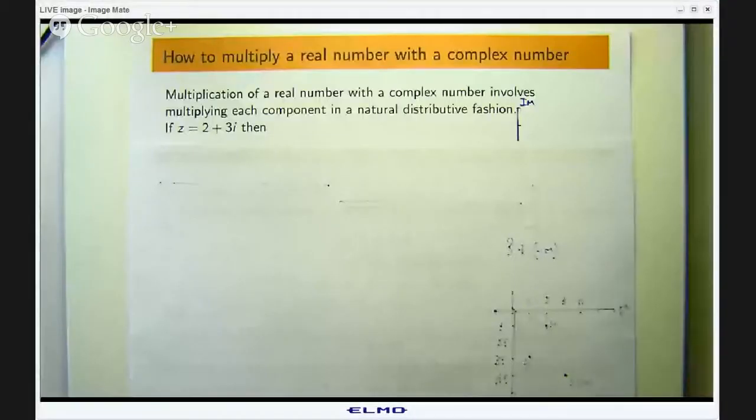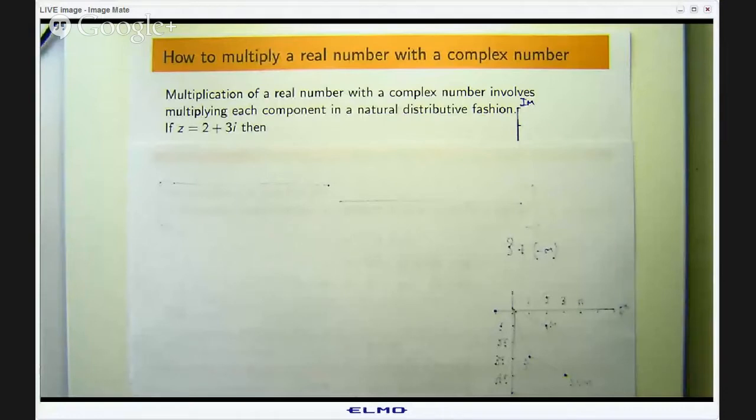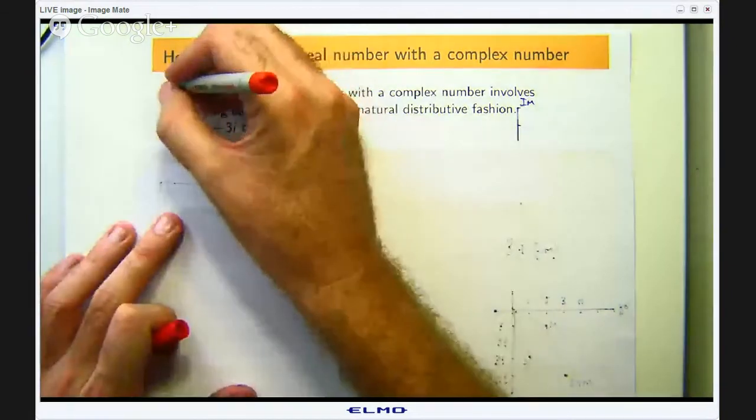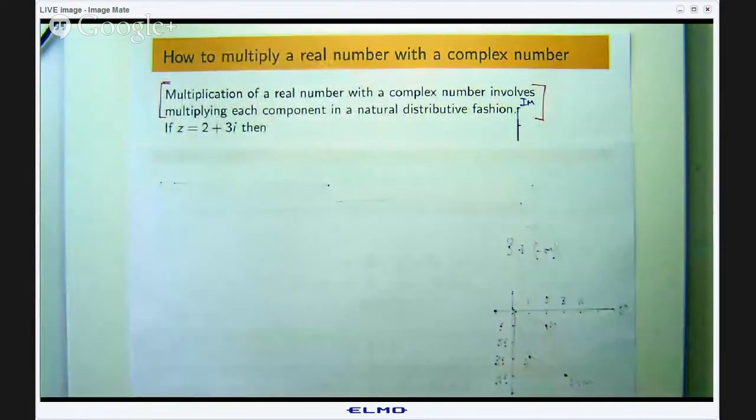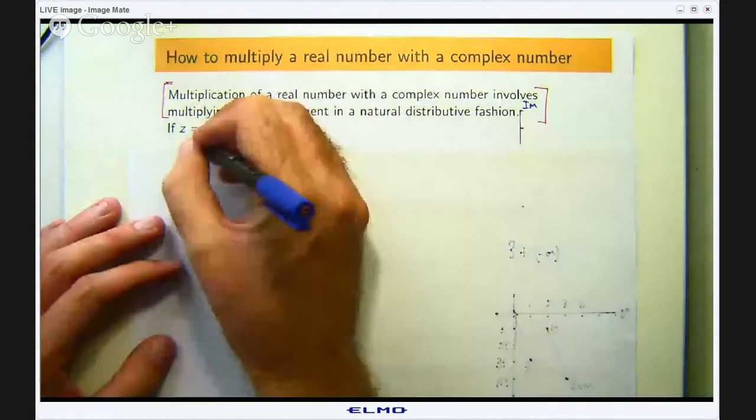Okay so how to multiply a real number with a complex number. The basic idea is to multiply each component of the complex number with the real number in a natural distributive fashion. So let me show you an example.